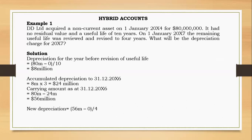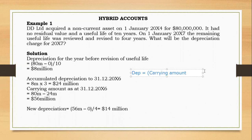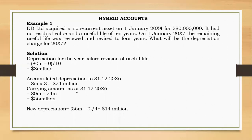The new depreciation formula is: carrying amount minus residual value, divided by remaining useful life. The carrying amount is 56 million, residual value is zero, remaining useful life is four years. So new depreciation = 56 million minus zero over 4 = 14 million dollars. Note: if we had been told this was an error rather than a revision, we would not use the 10-year figure from the beginning.